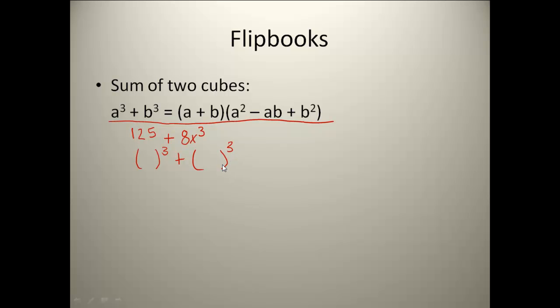On your little cheat sheets that we've been using for perfect squares, we're going to use that same sheet for perfect cubes. Instead of looking in the x² column, look in the x³ column. When you look there, you should see the numbers 8, 27, 64, 125. Those are our perfect cubes, meaning we can break them down. So if I have 125 and you look on your cheat sheet, you'll see that 125 is really 5 cubed.